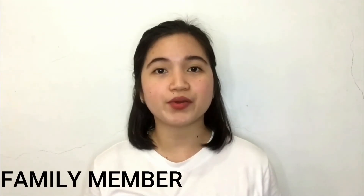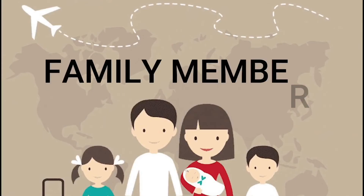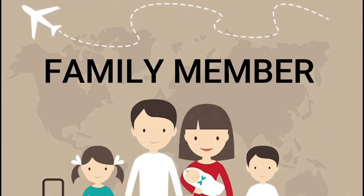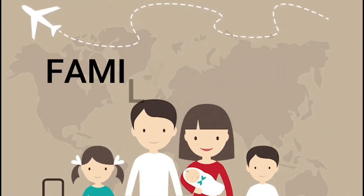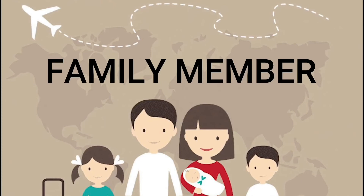The fifth type is the family member migrant. These are family members joining their relatives who are already within a foreign country under one of the types of migrants mentioned earlier.